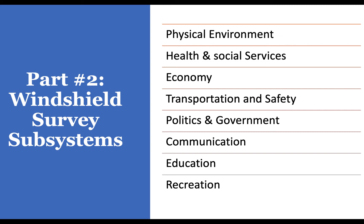What types of crimes are committed and do people generally feel safe? Under politics and government, are there signs of political activity like posters or meeting signs? What party affiliation predominates? Is there a mayor? Under communication, are there common areas where people gather? What newspapers are in the stands? Do people have TVs and radios? Is internet access evident with cafes and Wi-Fi signs? Is social media used to communicate? What are the formal and informal means of communication? For education, are there schools and libraries? What is the reputation of the school and the dropout rate? Are there extracurricular activities and a school health nurse?